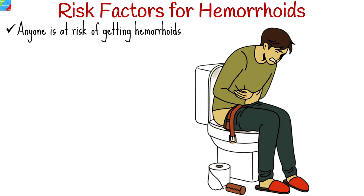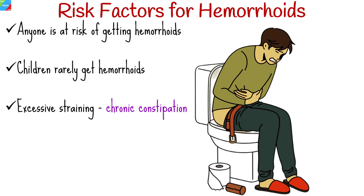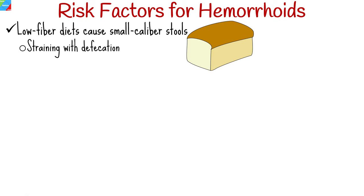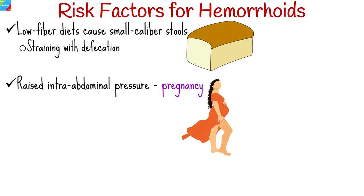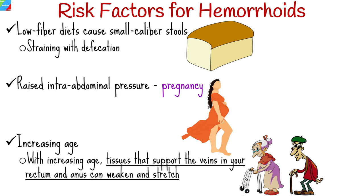Anyone is at risk of getting hemorrhoids, even teenagers, though children rarely get them because they take so long to develop. Excessive straining is one of the key risk factors, such as in chronic constipation. Low-fiber diets cause small-caliber stools, which result in straining with defecation. Raised intra-abdominal pressure, as in pregnancy, is also a risk factor, as is increasing age, since the tissues supporting the veins in the rectum and anus can weaken and stretch.